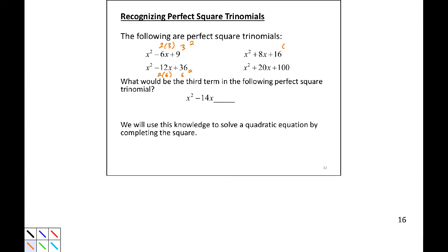This is 4 squared, and this is 2 times 4. So the middle number, we need to find half of that and then square it is the process we're going to take.